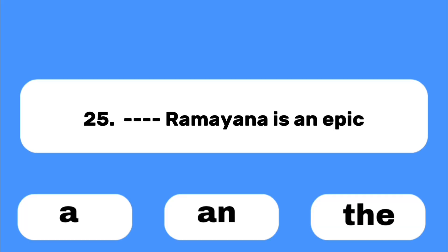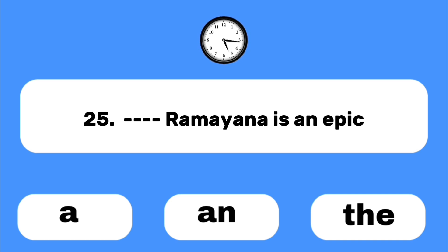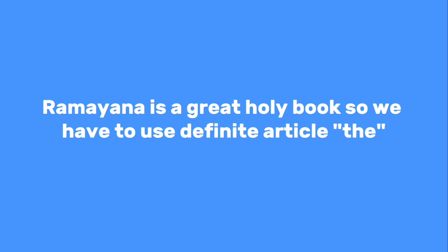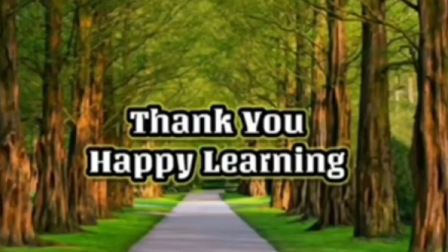Number twenty-five: ___ Ramayana is an epic. The Ramayana is a great holy book, so we use the definite article 'the.' Thank you. Happy learning!